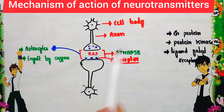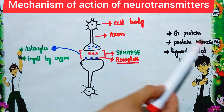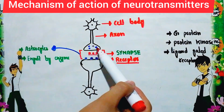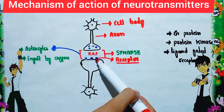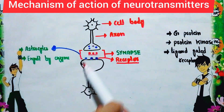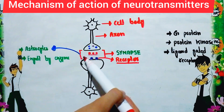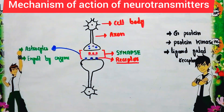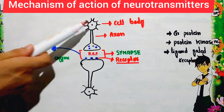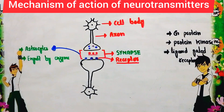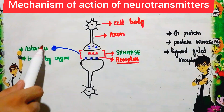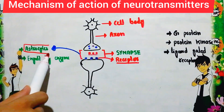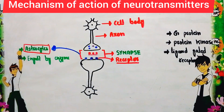In the postsynaptic membrane, special receptors are present — including G-protein, protein kinase, and ligand-gated receptors. The calcium channel opens, the neurotransmitter binds to the receptor on the postsynaptic membrane, causes depolarization of that membrane, and transmits the nerve impulse from this neuron to the postsynaptic neuron.